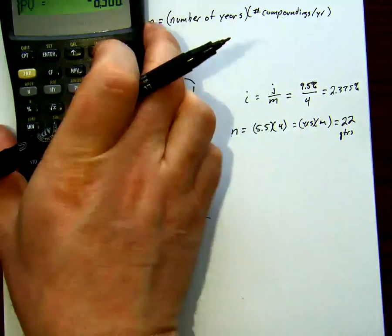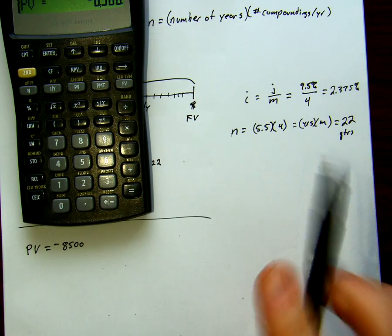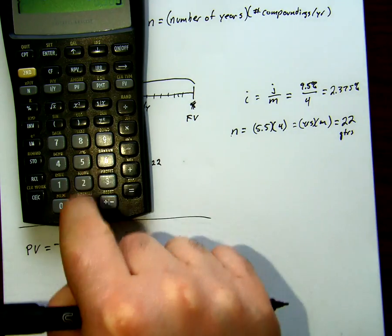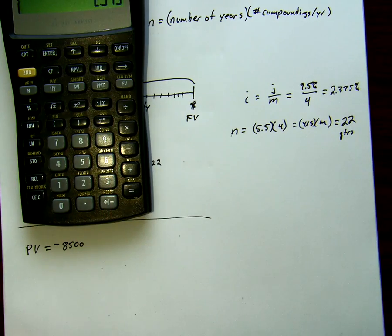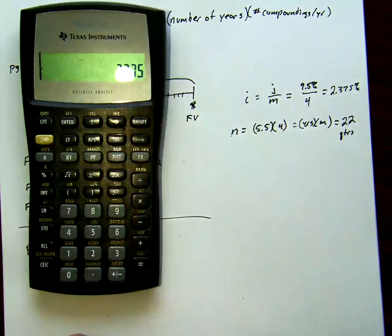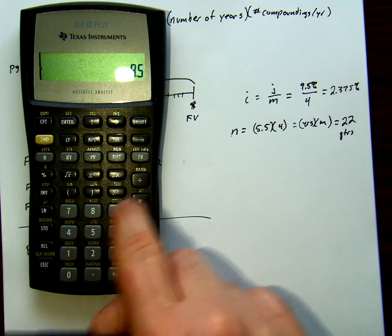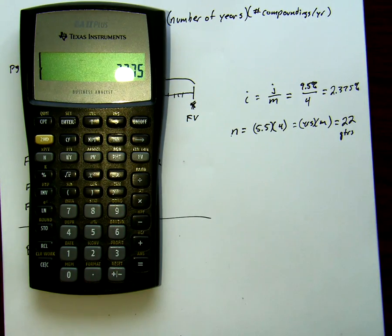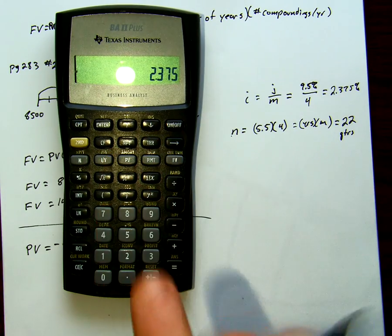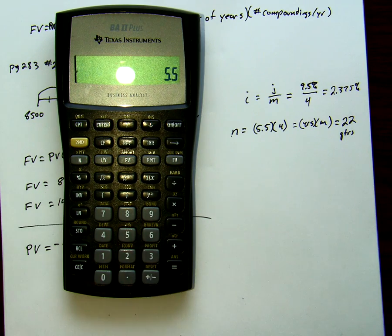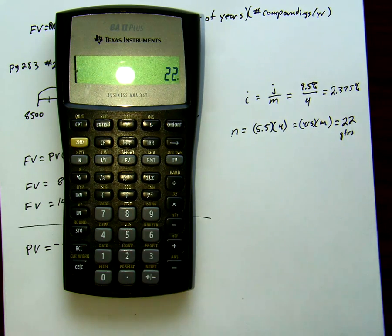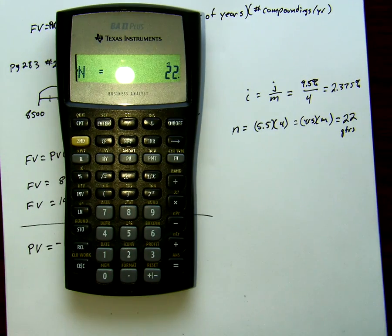Now we have all this work that we already did before of i and n. We'll say 9.5 divided by 4, 2.375, and we're going to put that into our i per y. Second thing we're going to do is take our 5.5 years times 4, so our 22, put that into n.